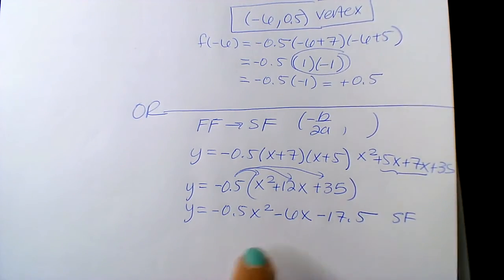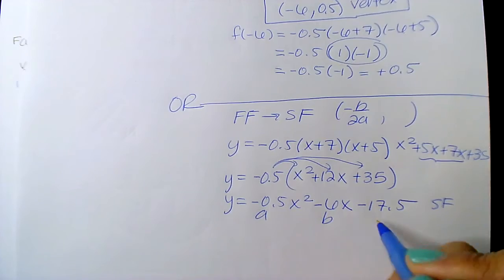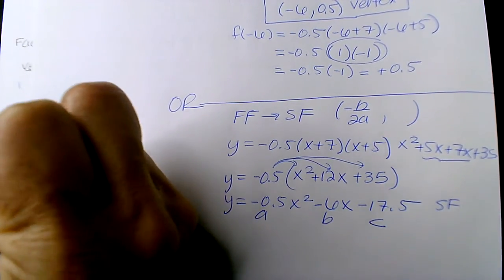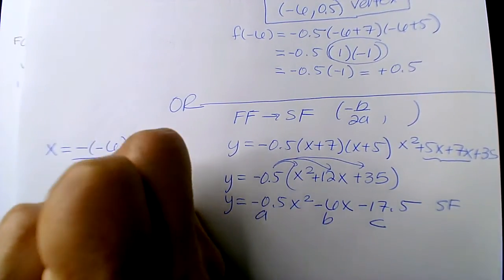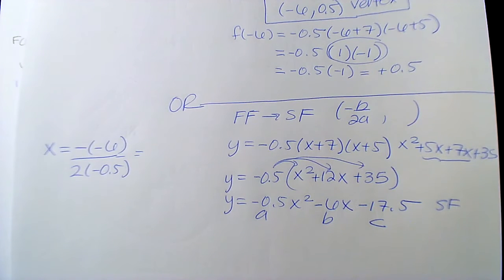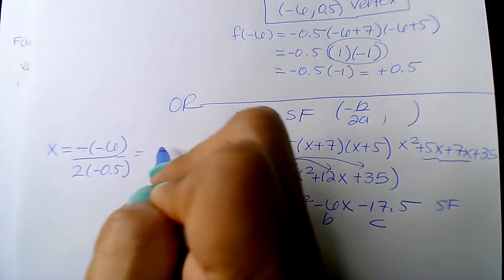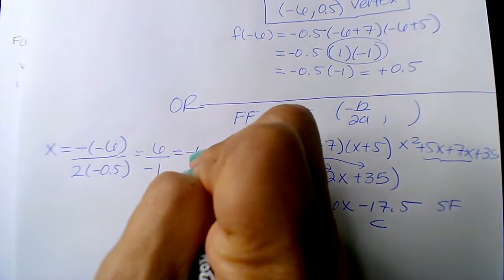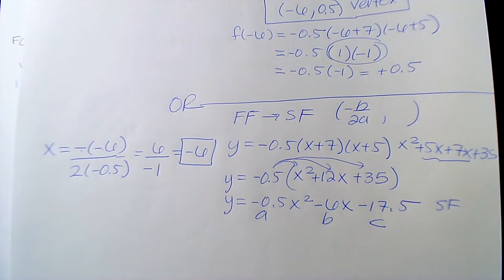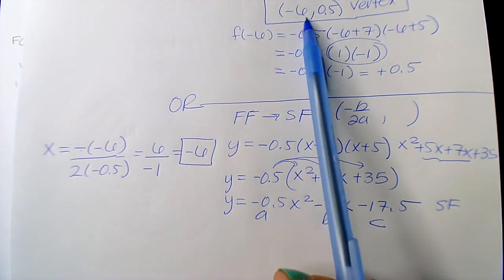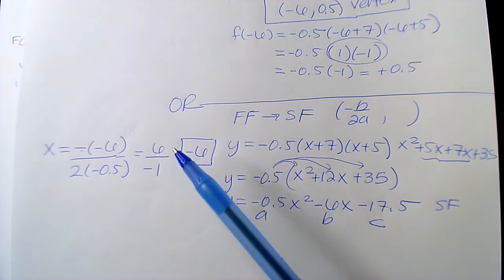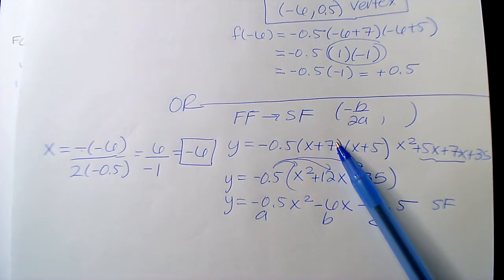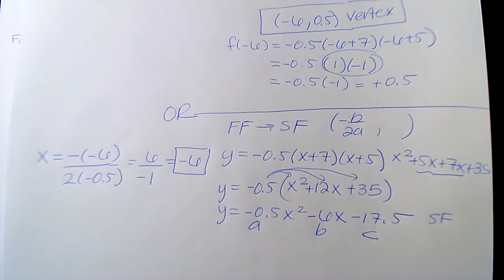Now if you wanted to do minus B over 2A to find your vertex, some of you are choosing that — that is perfectly fine. But this is the longer way; we already found it up above. Taking minus B over 2A: the negative cancels to positive, divided by 2 — what's half of that? Negative 1 in the denominator gives you negative 6. And there's your negative 6, which is exactly what we have up there. Then to get your y-value, take negative 6 and substitute it — either into standard form or factored form. You would get the half.